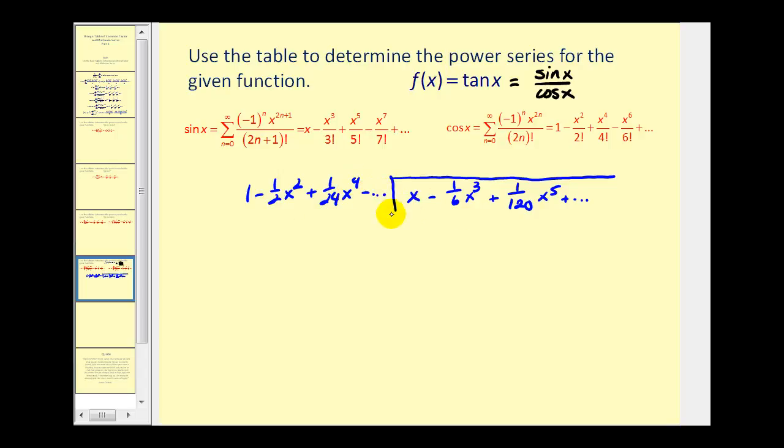And now I'll perform long division to start finding the terms for the power series for f of x equals tangent x. So we have to ask ourselves what times one will give us this first term here which is x. And that would be x because x times one is equal to x. And then we have to multiply x by the rest of these terms. So we'll have minus one half x cubed plus one twenty fourth x to the fifth and so on.